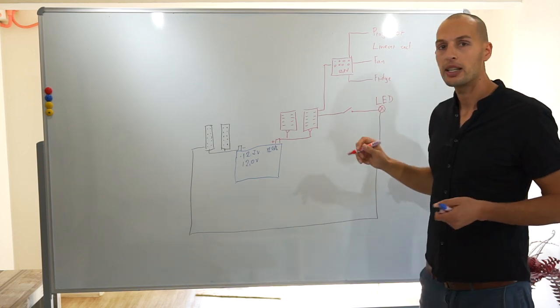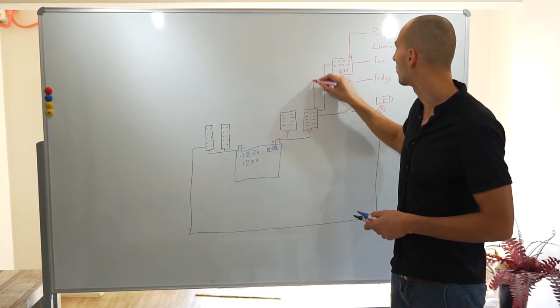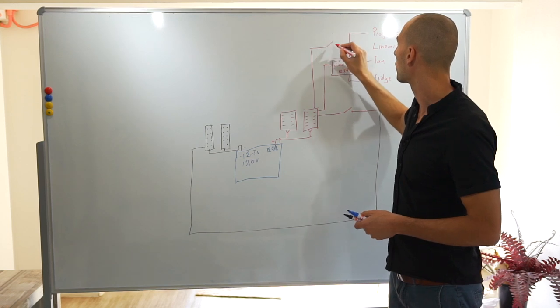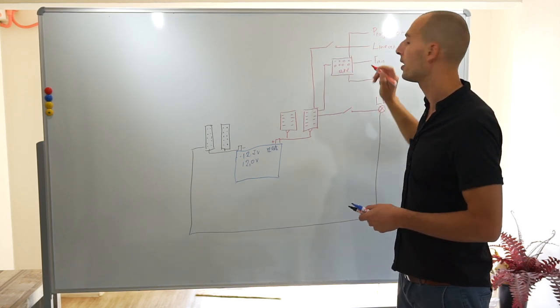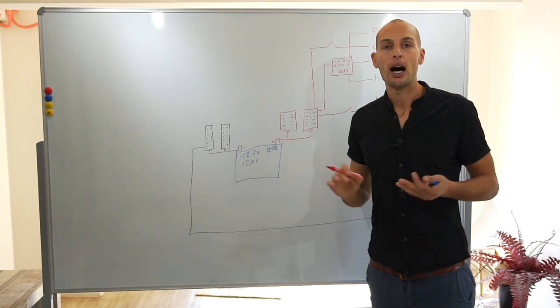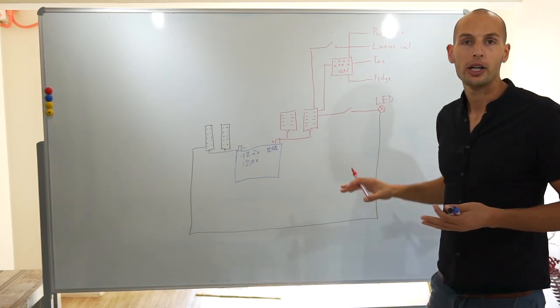And don't forget that the linear actuator that needs that specific rocking switch. So this would be a very easy scheme showing you how to wire appliances.